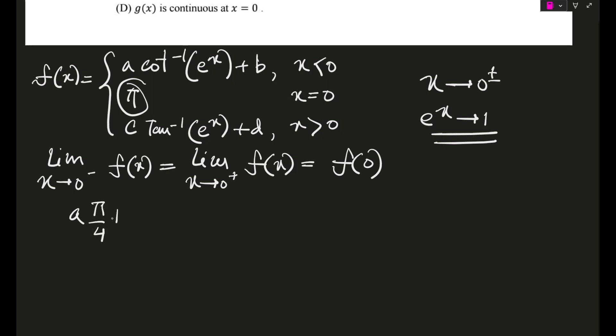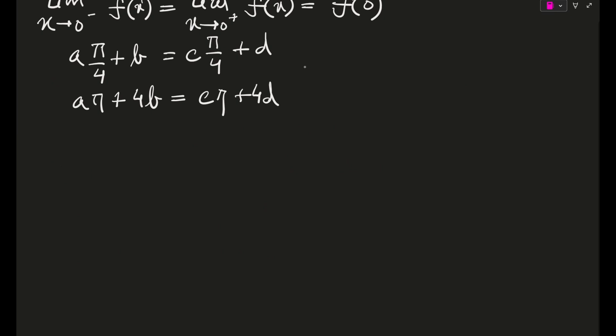b is equal to c pi by 4 plus d. So guys, if you evaluate this thing, then this will come out to be a pi plus 4b is equal to c pi plus 4d. So this thing actually automatically makes option number A correct.